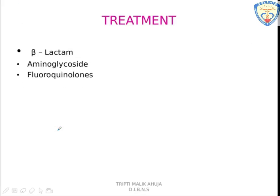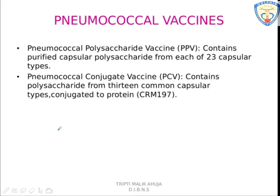For treatment, the antibiotics used are beta-lactams, aminoglycosides, and fluoroquinolones. A number of pneumococcal vaccines are available. PPV stands for pneumococcal polysaccharide vaccine, which is prepared from 23 different capsular types. PCV is the pneumococcal conjugate vaccine having 13 common capsular types conjugated to a protein. The vaccines are given to children during the first or second year and can also be given to aged individuals.